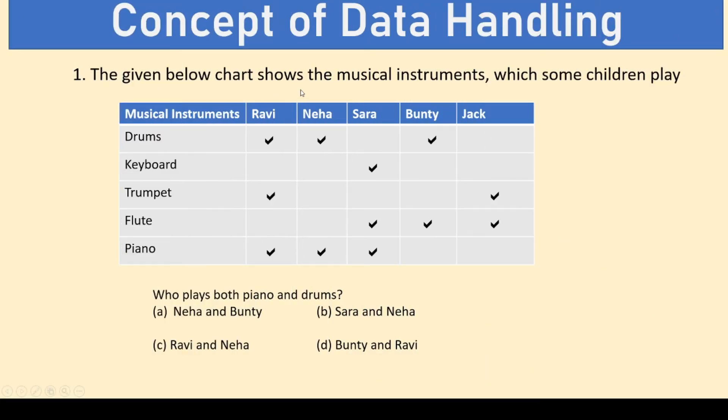The first question reads, the given below chart shows the musical instruments which some children play. Here are some musical instruments and here are the names of the kids. Who plays both piano and drums? In these type of questions, look at the tics at piano and at drums. So, Ravi has the tic at piano and drums and Neha has the tic around piano and drums. There is another at drums at Bunty but he does not have it for piano. So, our right answer is Ravi and Neha which is option C.